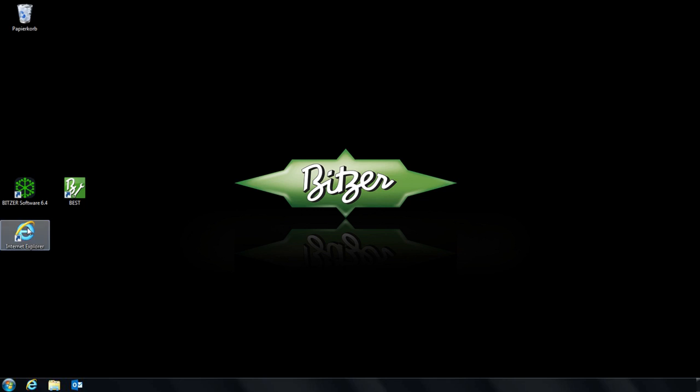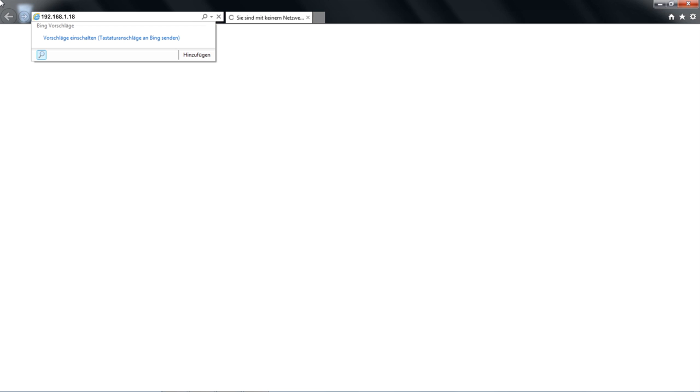The web server is structured in line with the Bitsa Best software. Access is provided via the web browser and requires the echo star IP address to be entered. Which means monitoring and remote maintenance are possible anywhere in the world, as long as the echo star is connected to the internet.